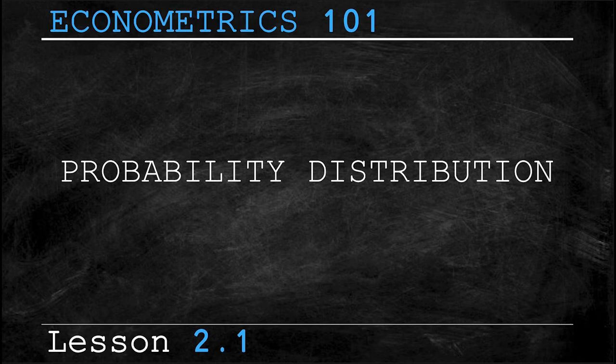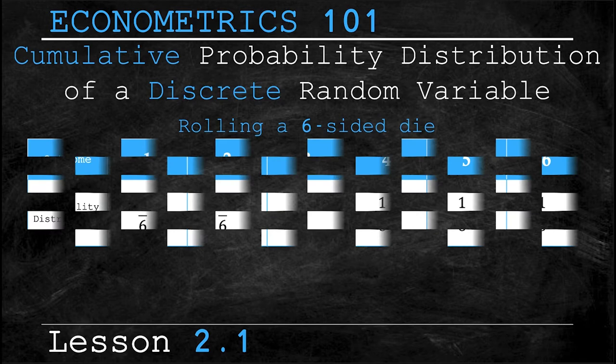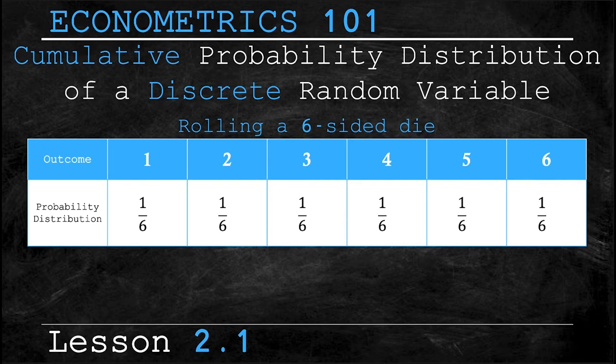The probability distribution is the list of all possible values of the variable and the associated probability that each value will occur. So in this specific example we're going to look at our six-sided die. All of the possible outcomes are listed in the top row so numbers one through six. Then in the second row we have their associated probabilities which in this case is one sixth for each event.